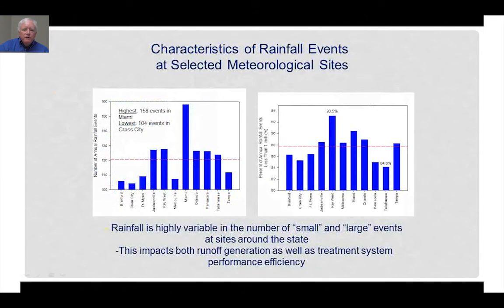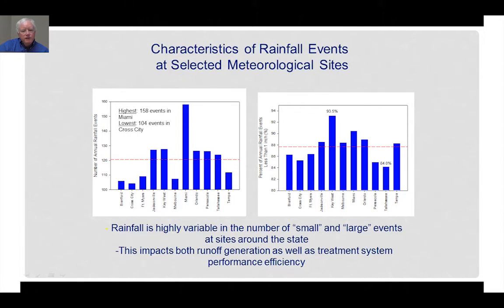Looking further at the characteristics of these events, we looked at the number of annual rain events at sites throughout Florida. The highest number of events per year occurs in Miami with 158 events per year, with the lowest number occurring in Cross City with 104 events per year. So you can see the variability in number of rain events per year at each of these major monitoring locations.